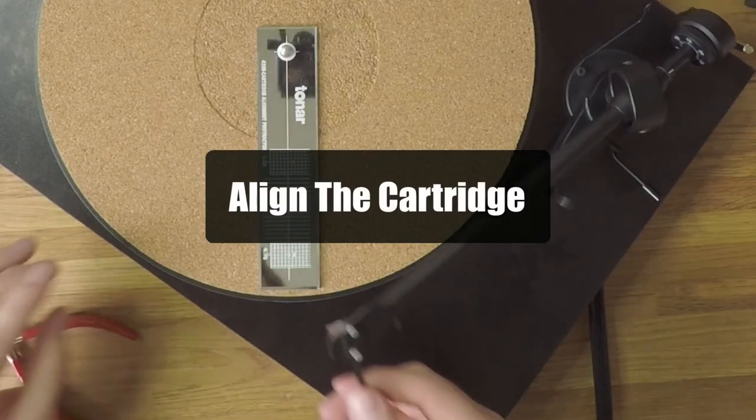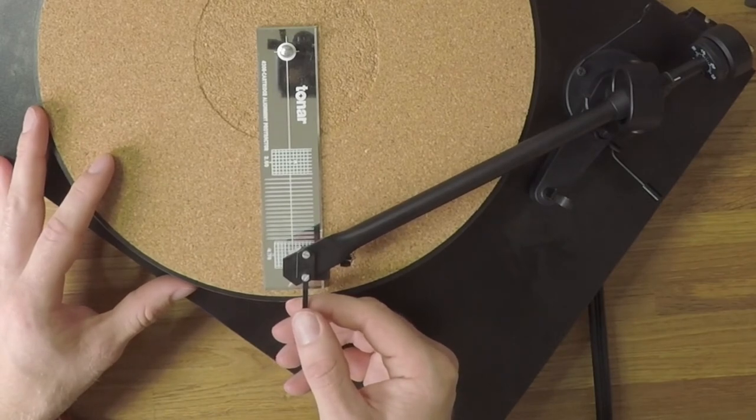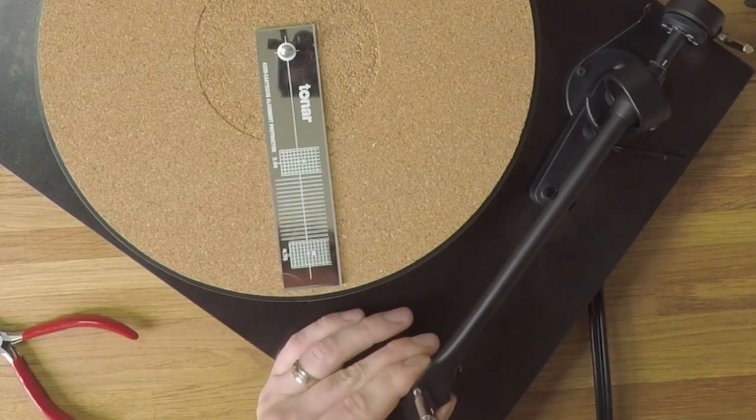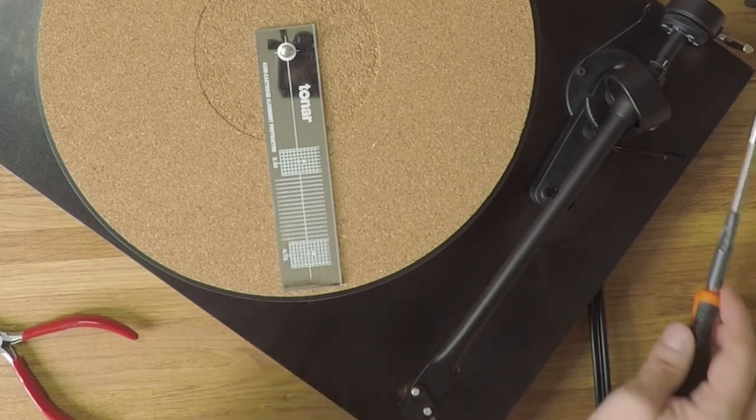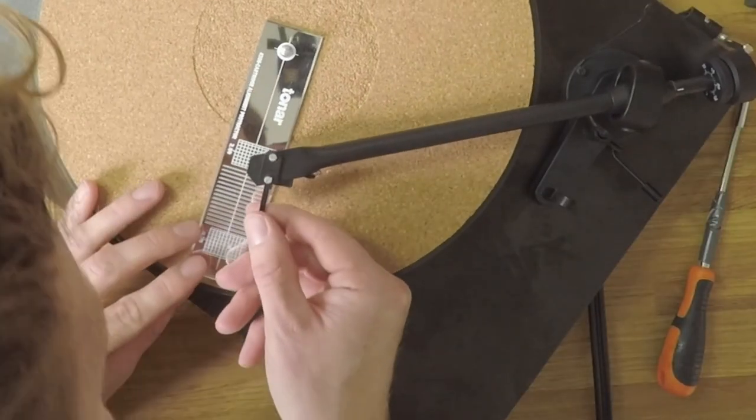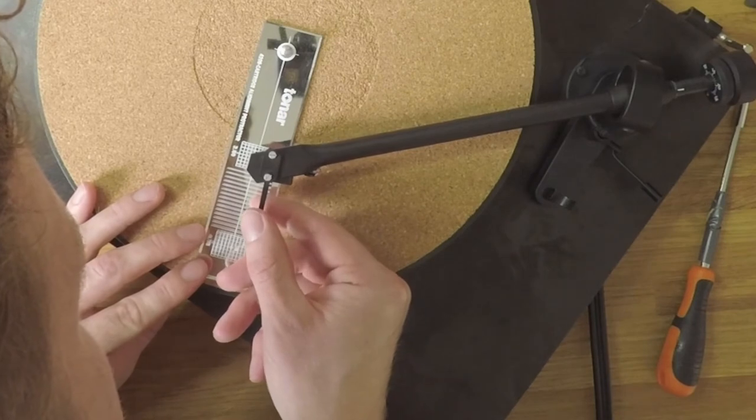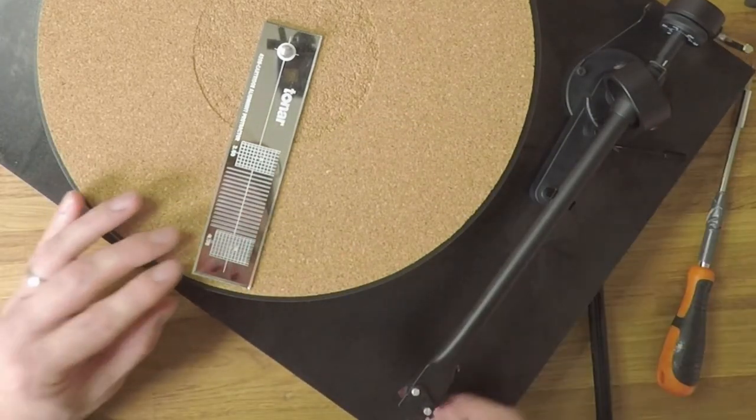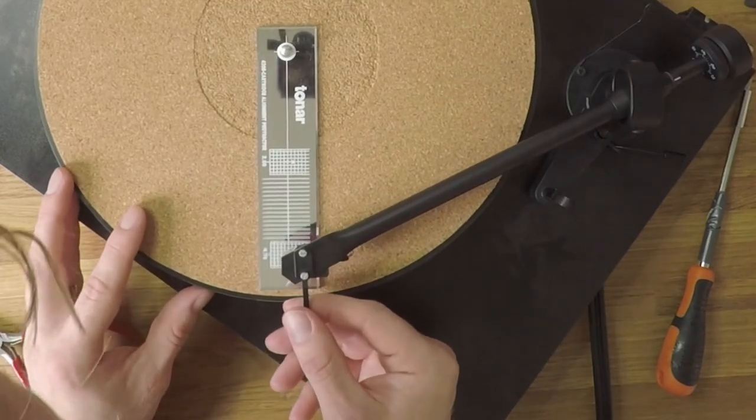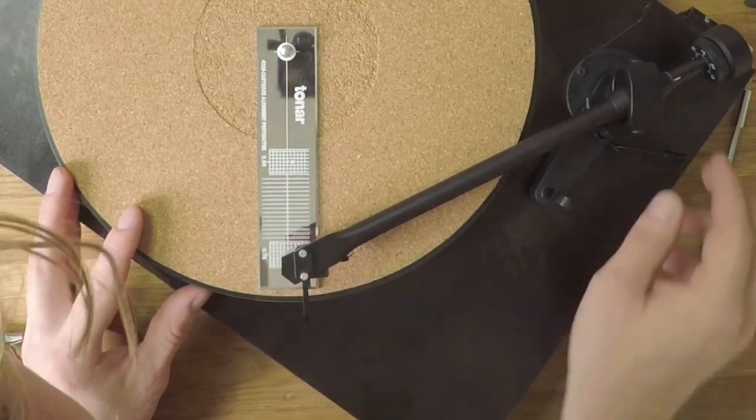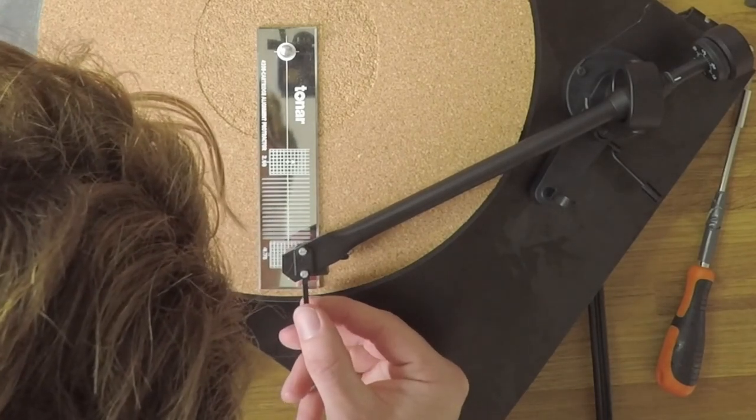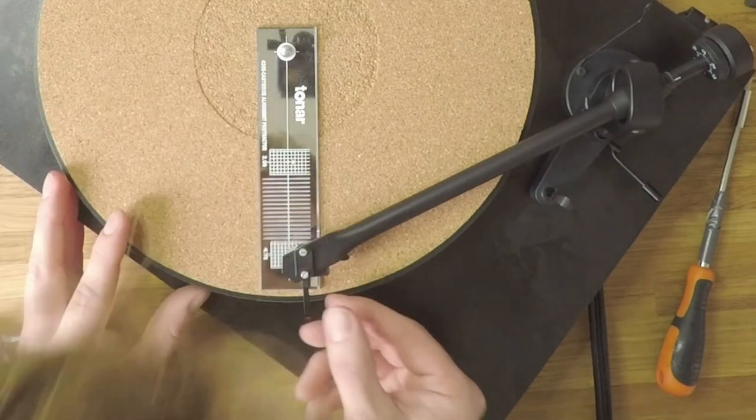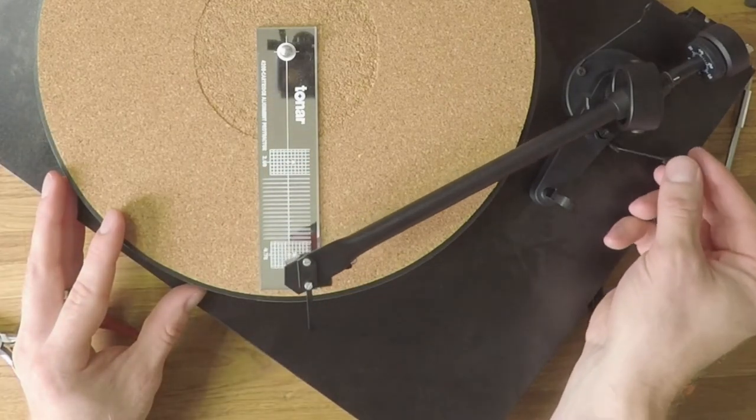Now comes the really fiddly bit and ultimately one of the most important aspects of installing a new cartridge. Using the alignment protractor, we want to make sure that the cartridge is aligned for the best performance across the surface of the record, essentially as it pivots from the beginning of the record to the run-out groove. A cartridge protractor has two null points where the stylus becomes tangent with the record groove. When your cartridge cantilever aligns to both null points, you will get the best possible tracking force across the record surface. Move back and forth between each null point until you get the alignment dead on. It's worth taking some time over this, so be patient and check from multiple angles.